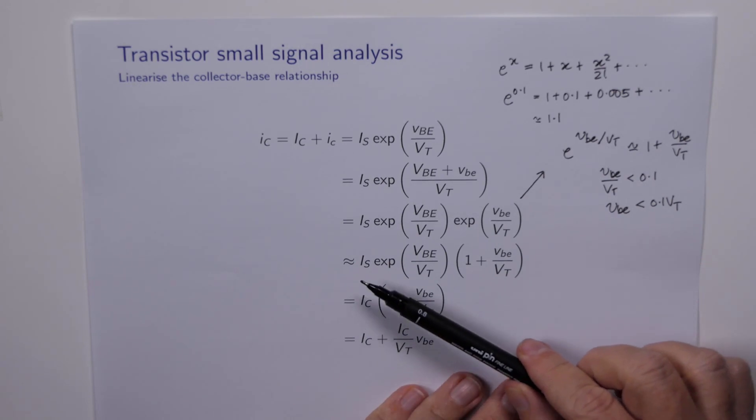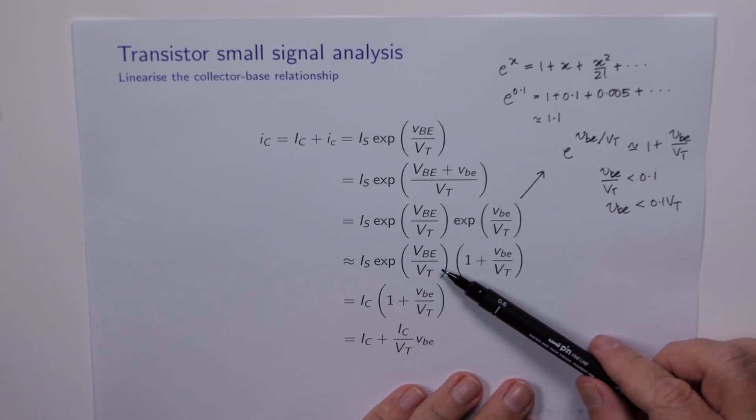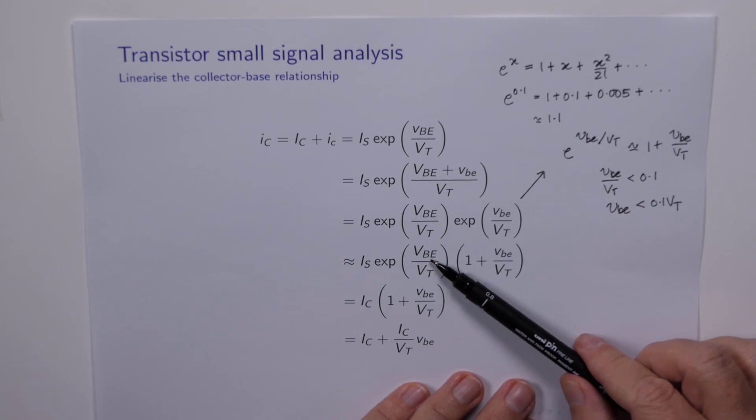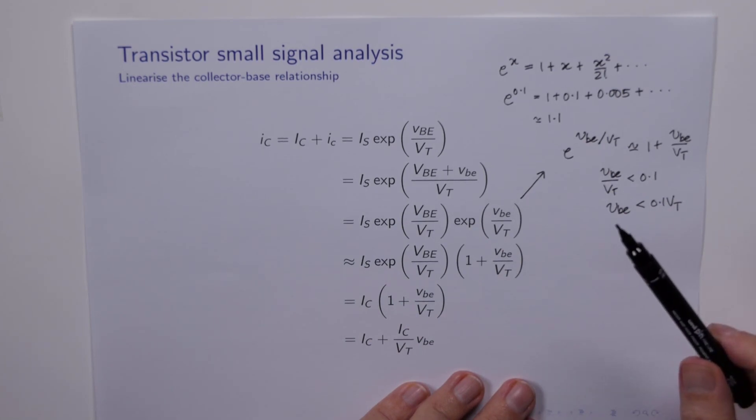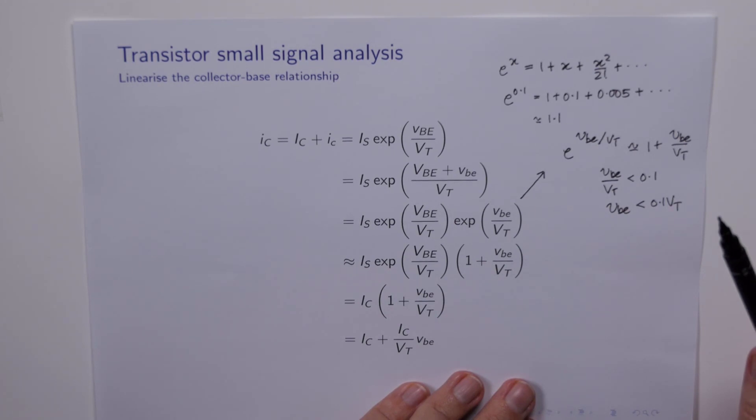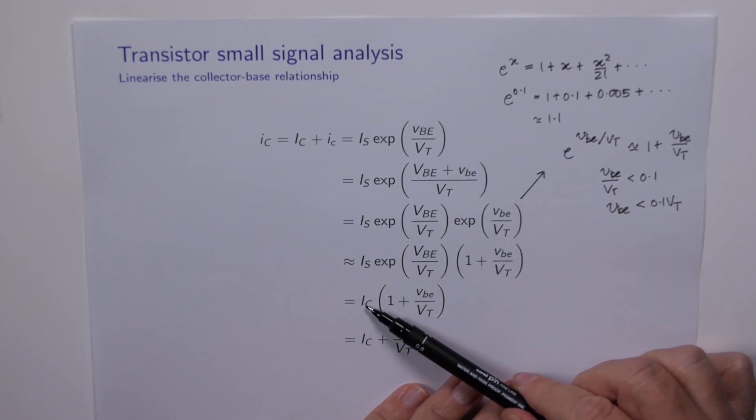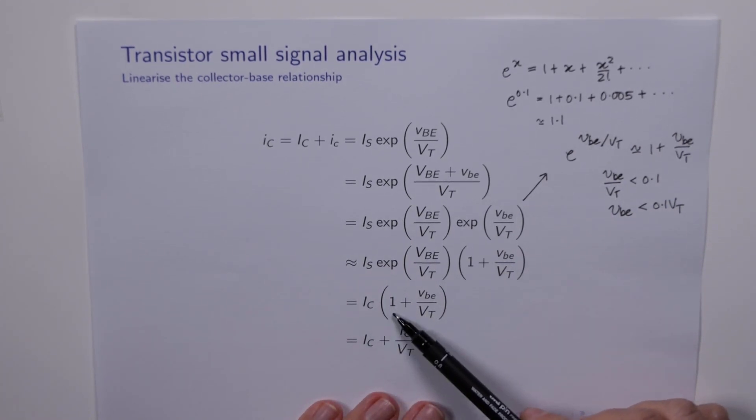All right, so returning to this term here, we now recognize that this must be the DC collector current, because with just the DC voltage VBE, this expression must be just big IC, the quiescent current for the transistor. So we can replace this term here with IC, then we can multiply out the brackets. IC times 1 is IC, BIC over VT times VBE. And crucially we see that the DC IC value appears on both sides of the equation, so that can be cancelled out.